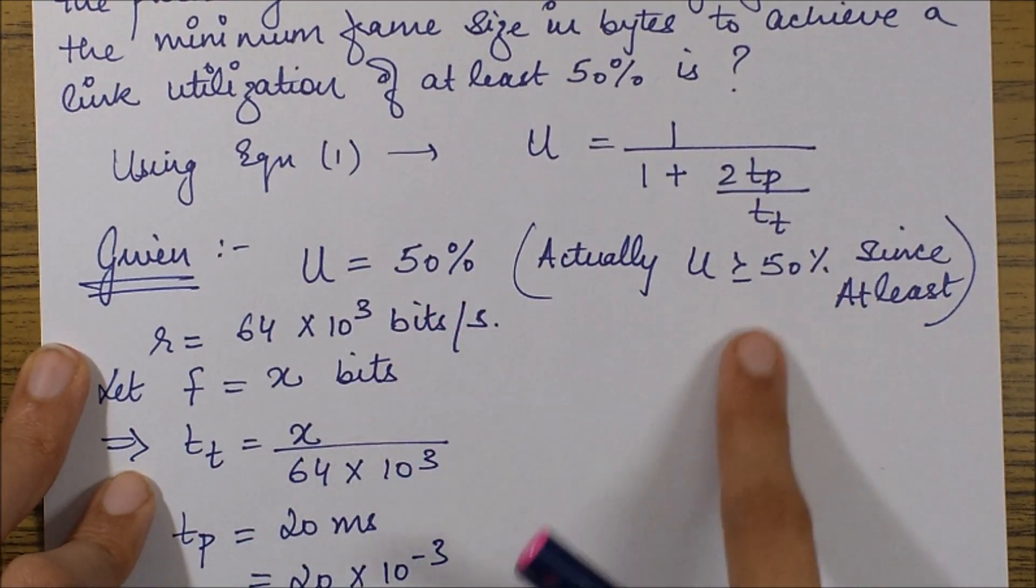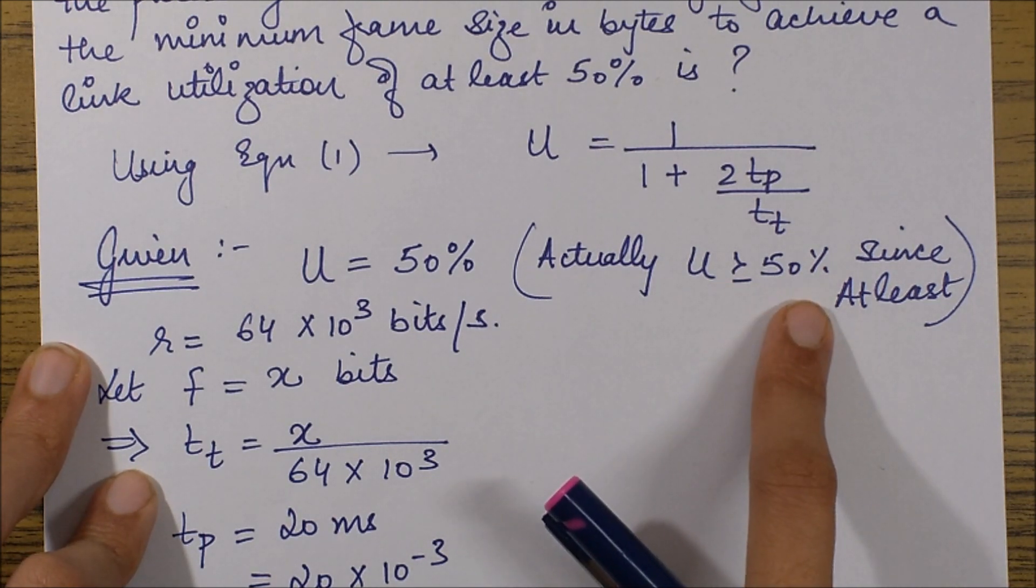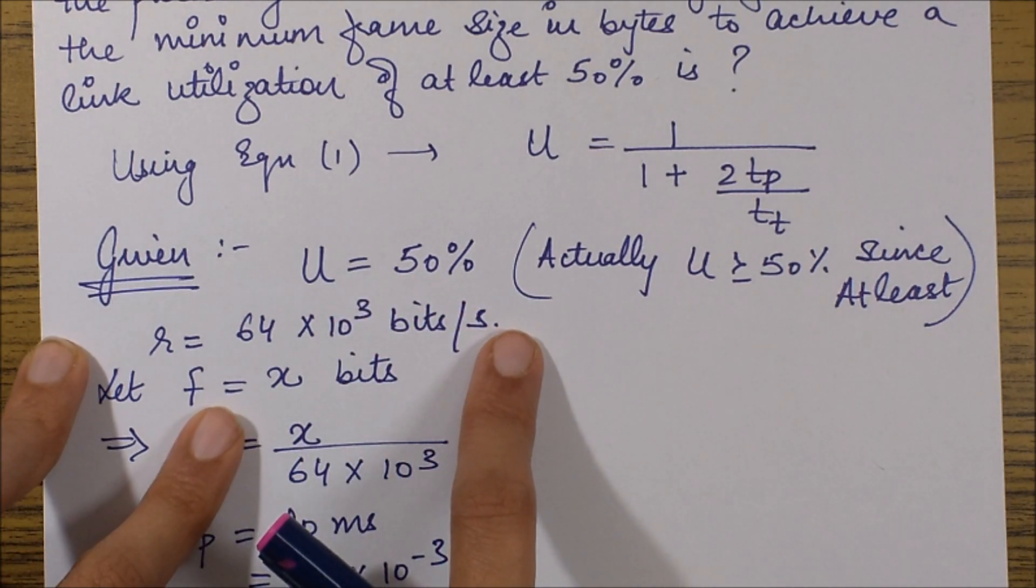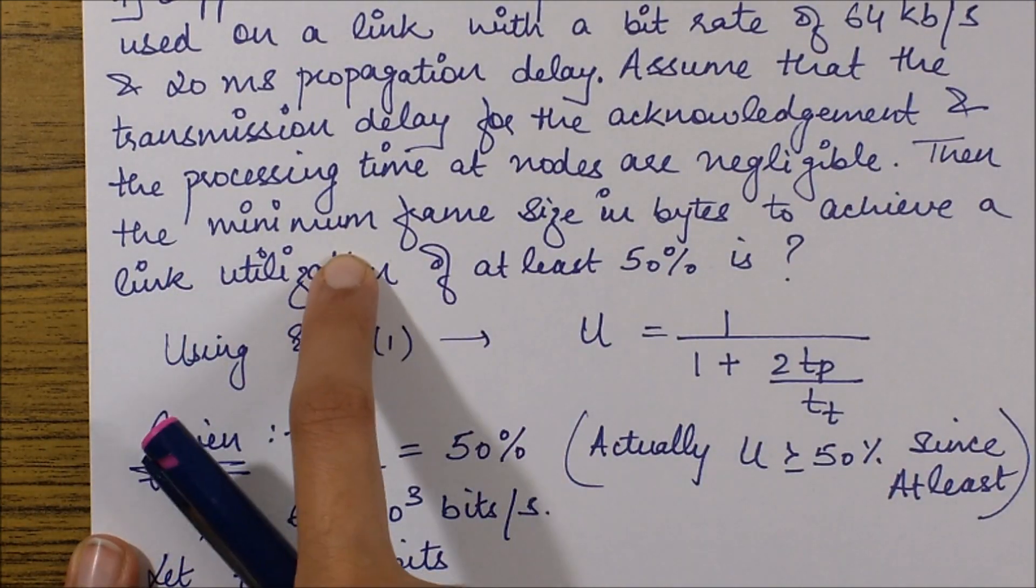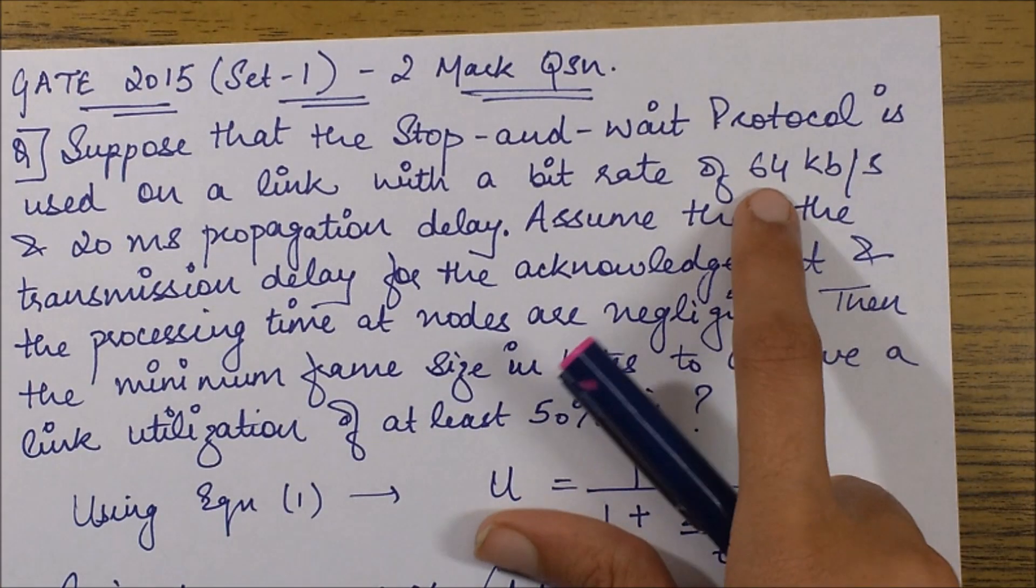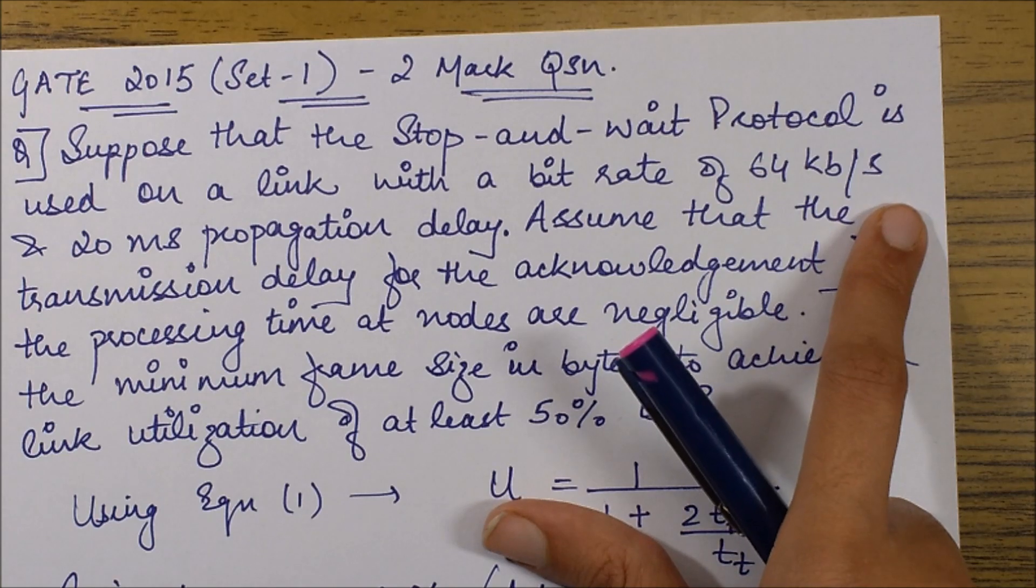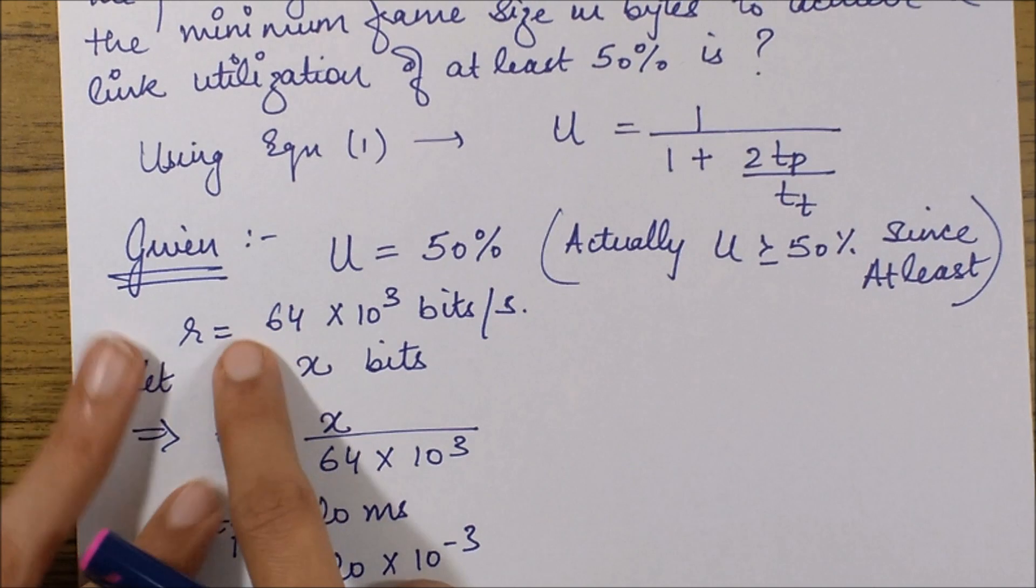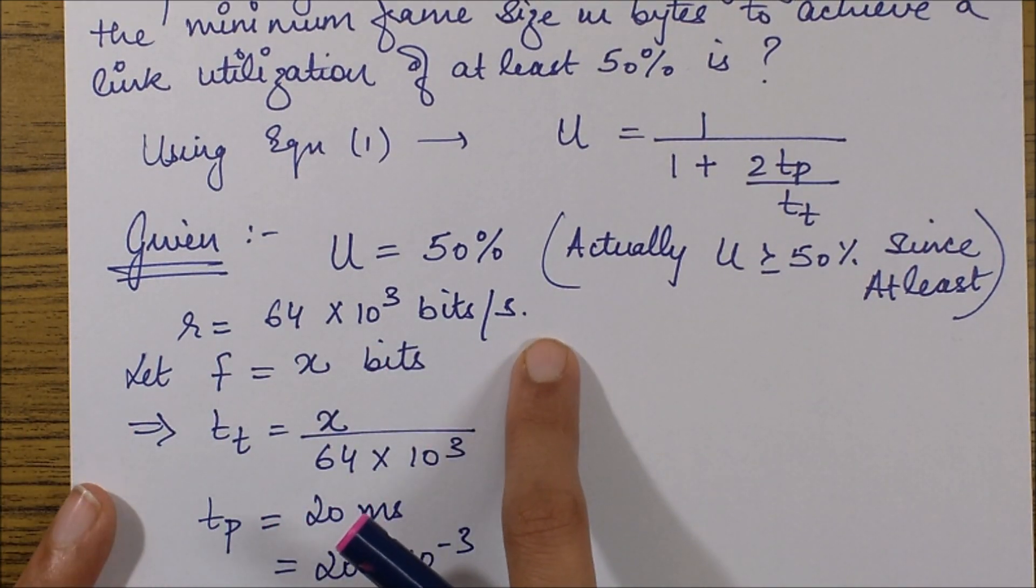First, I've been given the channel utilization is 50 percent. Actually it says utilization should be more than or equal to 50 percent, but for simplicity we'll take it as 50 percent because it's requiring the minimum frame size. Then r is 64 kilobits per second, so we write it as 64 into 10 to the power 3 bits per second.